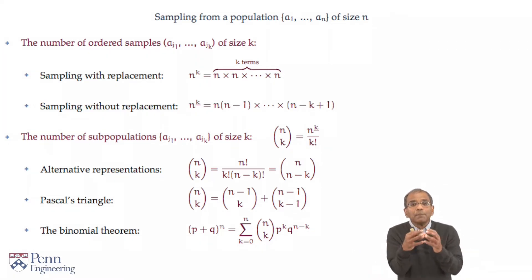If the sample constitutes a subpopulation of size k, a subset of size k, without order, then there are n choose k possibilities.